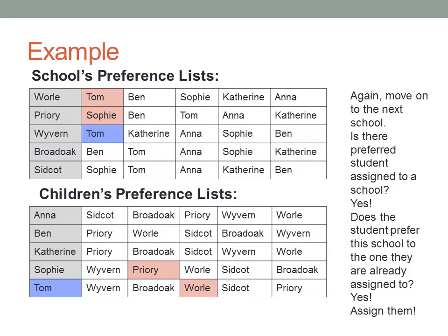Then we move on to the next school, Wyvern. Wyvern's preferred student is Tom, but Tom is already assigned to Well. So we check Tom's preference list — does he prefer Wyvern to Well? He does. We therefore unassign Tom from Well and assign him to Wyvern.